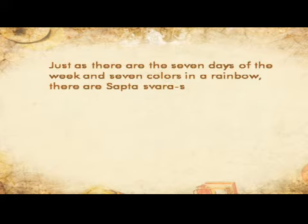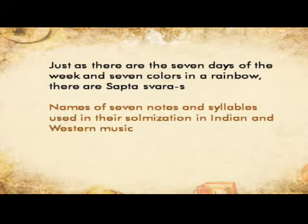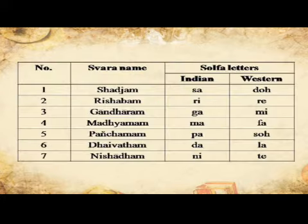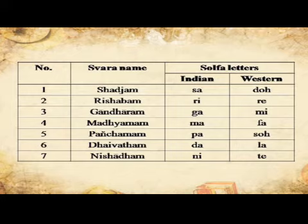The basis of all systems of music is the seven notes or swaras called Saptaswaras. Just as there are the seven days of the week and seven colors in a rainbow, there are Saptaswaras. The names of these seven notes and the syllables used in their solmization in Indian and Western music are given below.